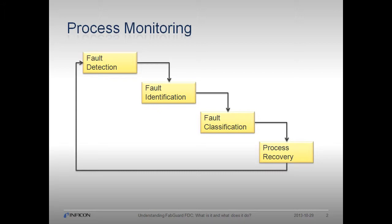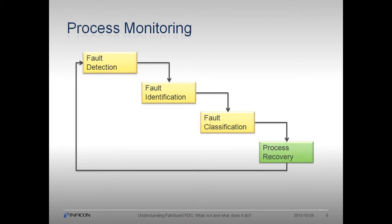Fault Detection and Classification, or FDC, is a subset of advanced process control that concerns itself with process monitoring. It encompasses Fault Detection — determining whether a fault has occurred; Fault Identification — identifying the process variables most relevant to diagnosing the fault; Fault Classification — determining the cause of the out-of-control condition; and Process Recovery — removing the effect of the fault from the process tool.